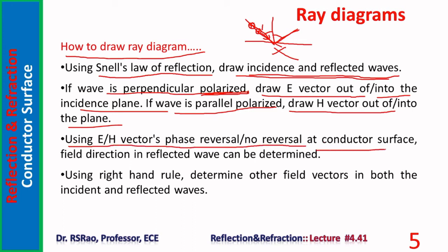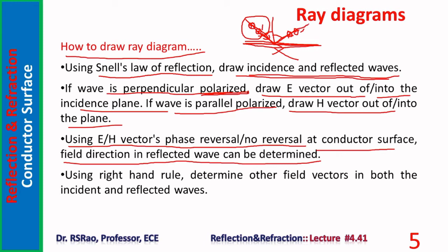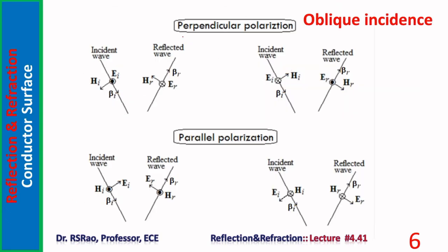Using E or H phase reversal (or no phase reversal) at the conductor surface, field directions in the reflected wave can be determined. For a perpendicularly polarized wave, E is either out of or into the plane of incidence — in either case it is parallel (tangential) to the reflecting surface. Therefore, the tangential component of E undergoes phase reversal on reflection from a perfect conductor. So if E is out of the board in the incident wave, it is into the board in the reflected wave, and vice versa.